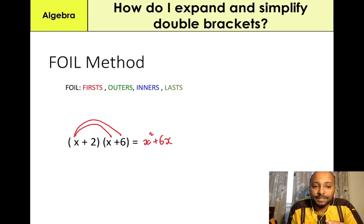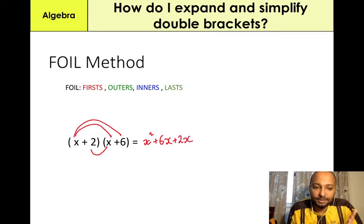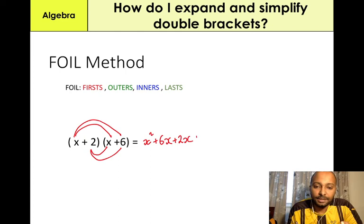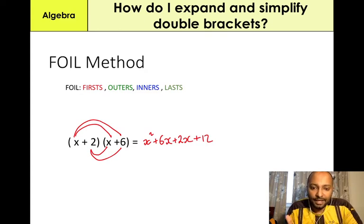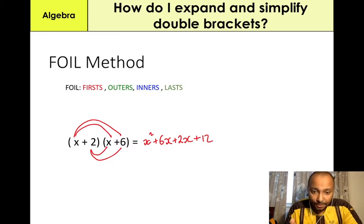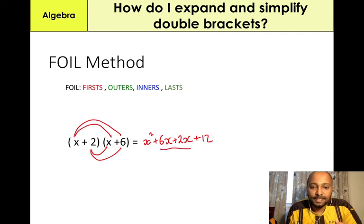The third step is the Inner — it's going to be the two inner numbers and variables: 2 times X, which gives us 2X. And Last, it's the two last numbers in each of the brackets: 2 times 6, which is 12. Now at this stage you need to simplify the expression: X squared plus 6X plus 2X plus 12. You're going to collect like-for-like terms — the only similar terms are the 6X and the 2X. So 6X plus 2X gives us 8X.